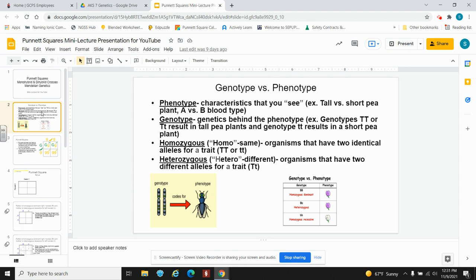This can be a physical trait, like tall versus short pea plant height, eye color, hair texture, or this could be something like a physiological trait that you can't see with the visible eye, like blood type.